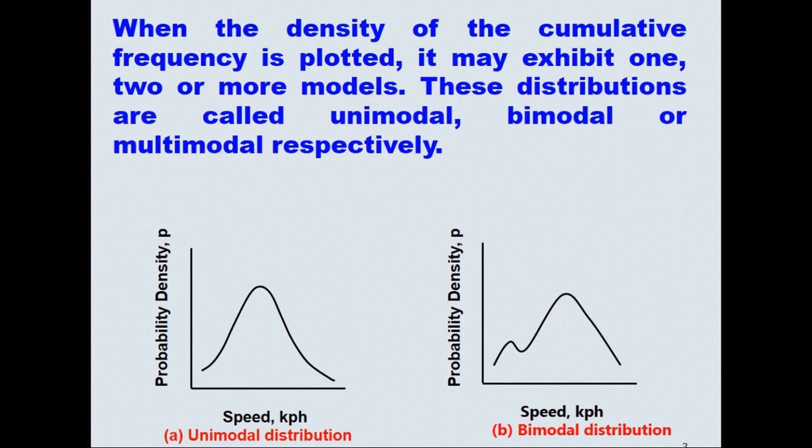When the density of the cumulative frequency is plotted, it may exhibit one, two or more modes. These distributions are called unimodal, bimodal or multimodal respectively. A review of literature shows that for speed data shown in this figure here, a normal distribution is used. But there is no distribution available for the bimodal speed distributions like this.